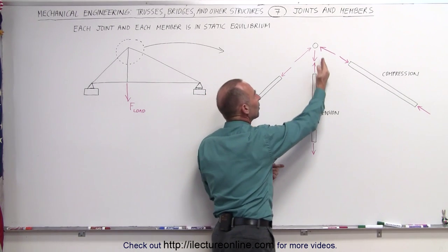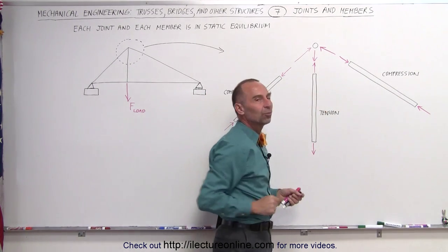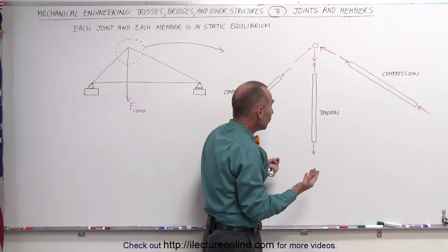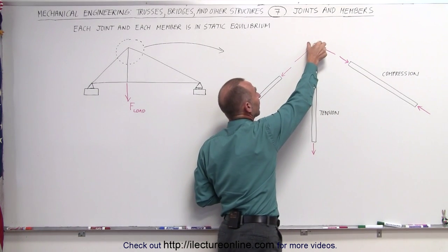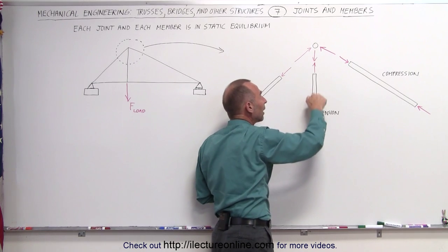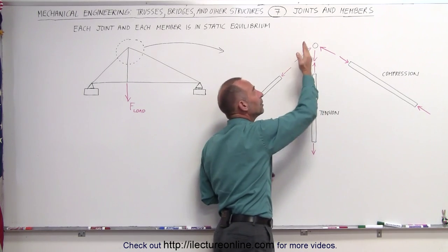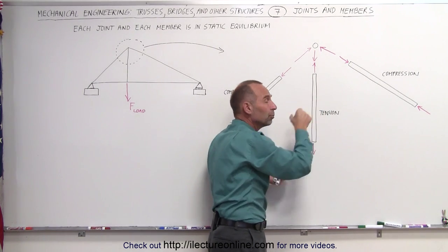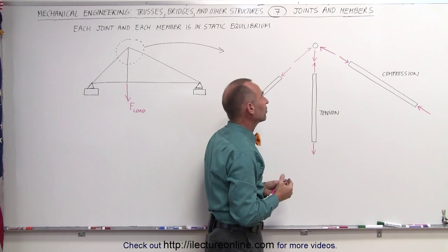Why would there be a force in the up direction if there's tension on this particular beam? Well, the reason is because this beam is attached to this joint right there. If the beam is being pulled down, the joint will be pulling up on the beam, otherwise the beam would start moving downward, and that's how it makes sense.